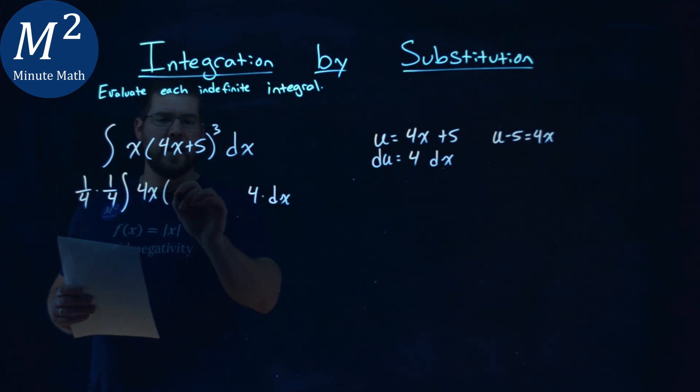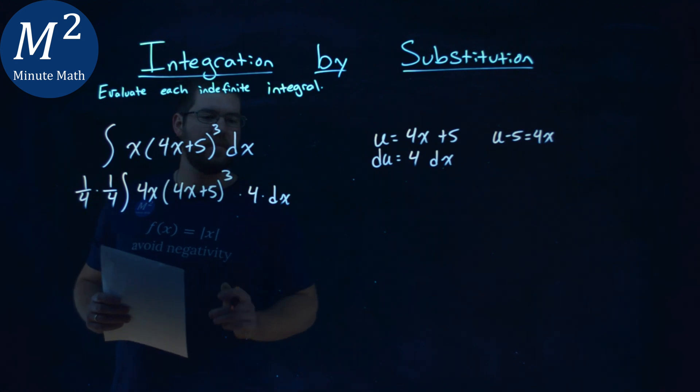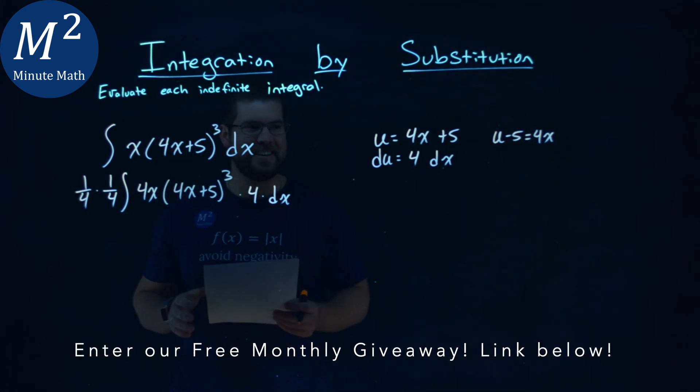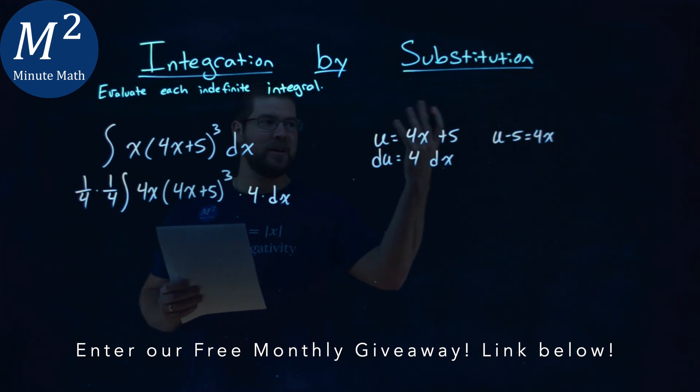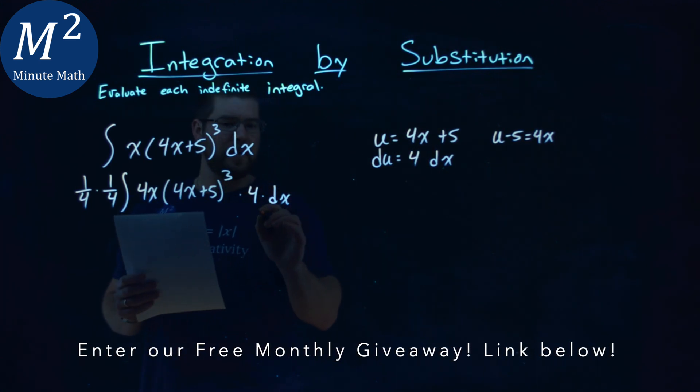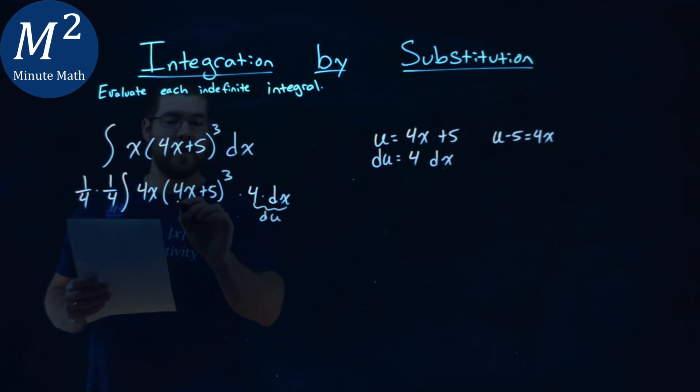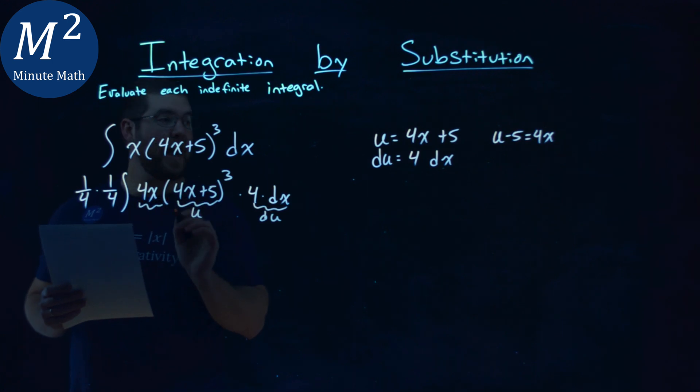Then we have a 4x plus 5 to the third power. So notice again here, we have all little aspects going on here, right? We're writing x in terms of u. So right here, that 4 dx is my du. This 4x plus 5 turns out to be the u value. And this 4x here is a u minus a 5.